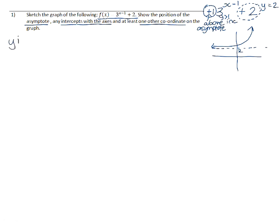So we are going to start by finding the y-intercept by letting x equal to 0. So that gives us 3 to the power of 0 minus 1 plus 2, which is a third plus 2, which is 7 thirds.